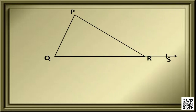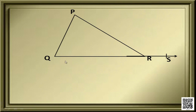Let's have a look at this figure. In this figure, you see the line QR is extended and S is a point on it. Thus, the angle PRS is formed. This angle is called the exterior angle of the triangle. And we have three interior angles: PRQ, QPR, and PQR.